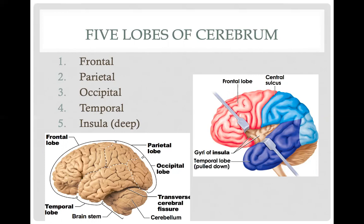In red we have the frontal lobe; going toward the back you have the parietal lobe; the most posterior aspect of the brain has the occipital lobe; and in dark blue is the temporal lobe. Note that if you move the frontal lobe and separate it from the temporal lobe, you will see additional gyri and sulci underneath — that is another part of the cerebrum called the insula, which has quite a few functions even though it is not visible on the surface.